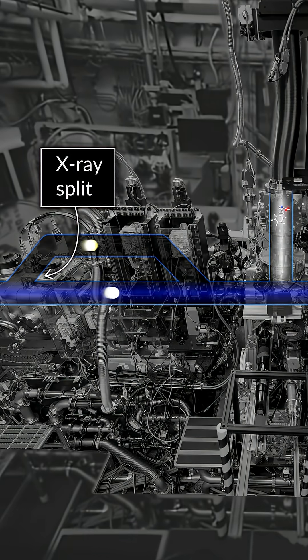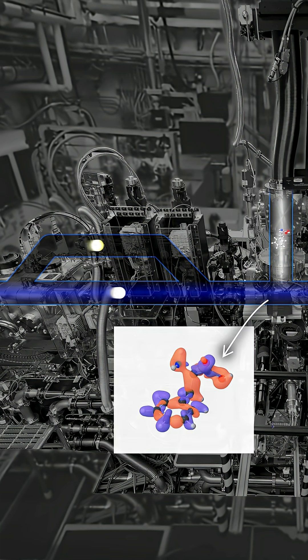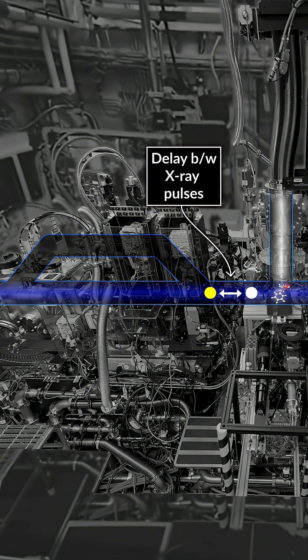Two x-ray pulses are used. The first starts the motion of the electron. The second captures what happened to the electron after a short time. By repeating the measurements and varying this short time between the pulses, we map the electron's motion.